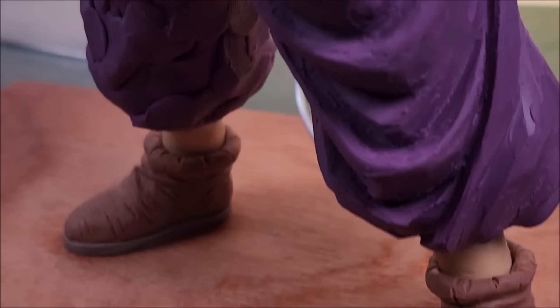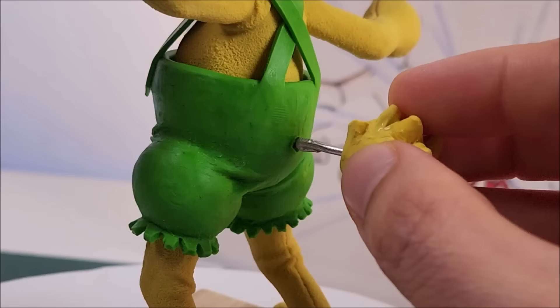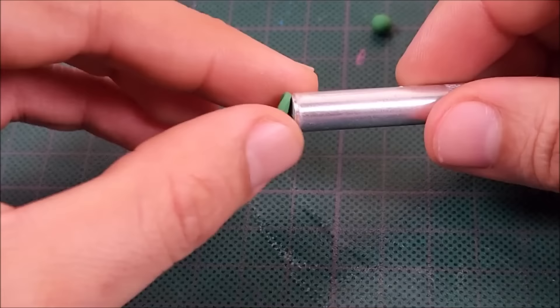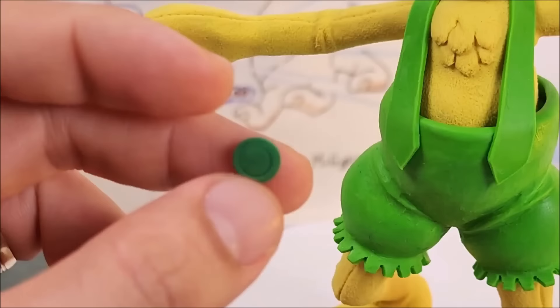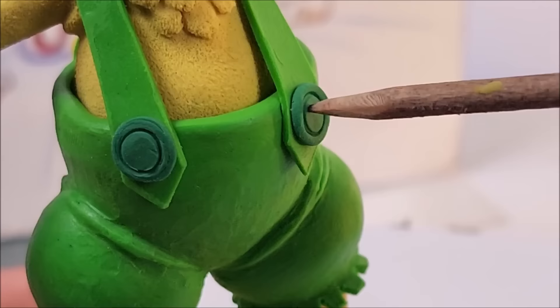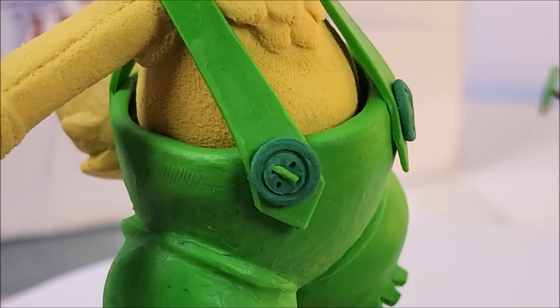Y hablando de Super Saiyajins, recuerda que estoy también haciendo una épica escultura de Gohan de la nueva película de Dragon Ball Super Super Hero, la cual nació a partir de un dibujo que hice en mi anterior video. Si no lo has visto, date una vuelta porque quedó épico. Puedes ver que después de insertar la colita de Bunzo, estoy haciendo los botones que van en esta parte de sus tirantes. Con un palillo hice cuatro pequeños orificios para poder colocar en estos delgadísimas tiras como si fueran hilos sujetando los botones.